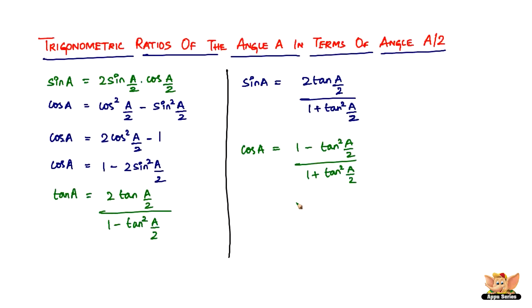So that's it. These are the number of trigonometric ratios of the angle A in terms of angle A by 2. Not very different from the previous video. All you had to do is in the place of A you had to put A by 2, and in the place of 2A you have to put A. Pretty simple.